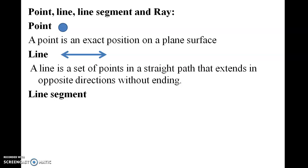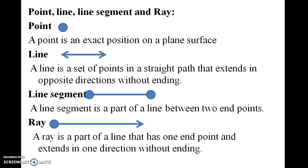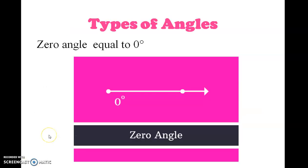Now let us see the line segment. A line segment is a part of a line between two endpoints. Next one is ray. A ray is a part of a line that has one endpoint and extends in one direction without ending.